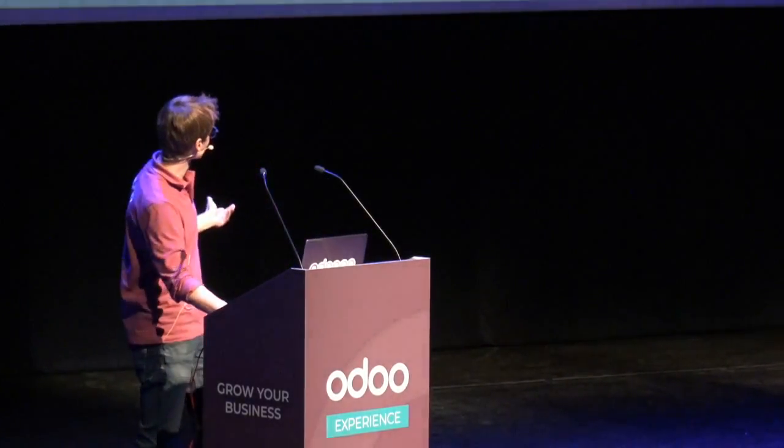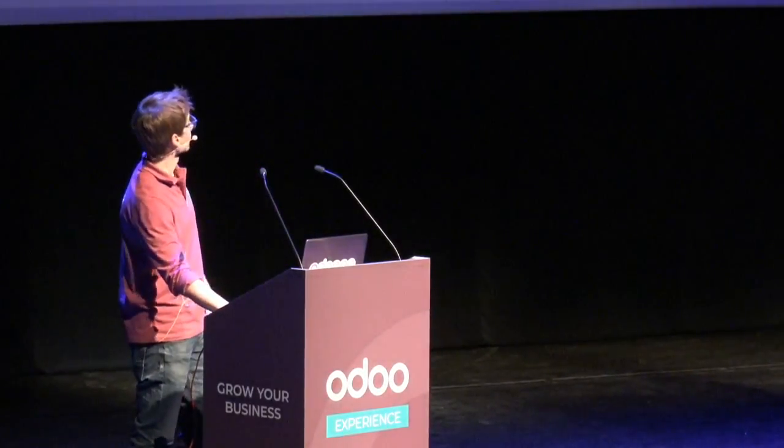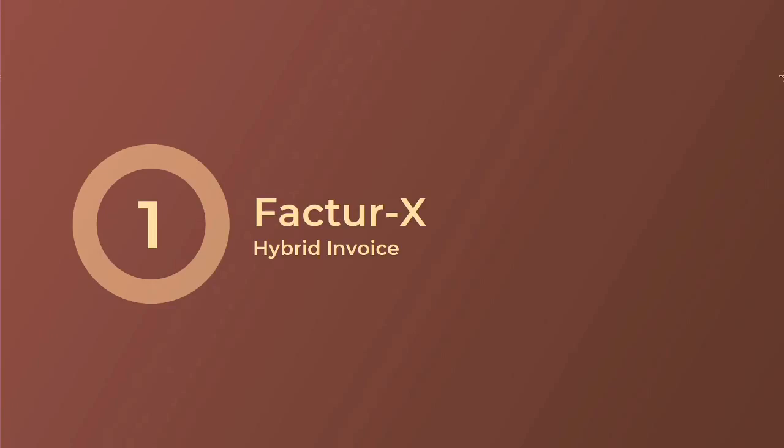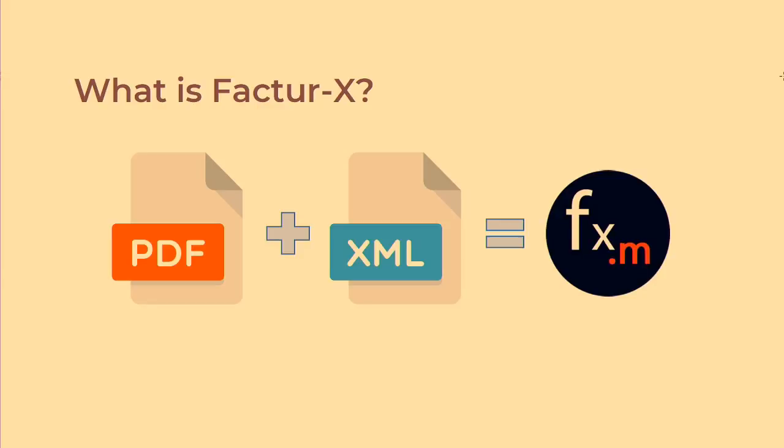The first way is called Factor X. This is a new format that came out last year, so it's quite new, and it's a hybrid invoice — an e-invoice if you want. Usually when you think about an invoice, if you receive it through email, it's a PDF file.